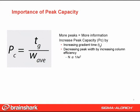You can increase gradient time, but this increases the analysis time, which is not desirable, or decrease the peak width. Since efficiency is inversely proportional to the peak width squared, a more efficient column will have lower average peak widths and will therefore exhibit higher peak capacity.